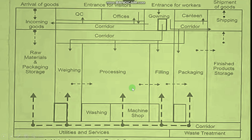There is a filling section where the processing unit will fill products. In a pharmaceutical house, a quality control laboratory is essential. There are also QC lab offices, gowning rooms — where workers change clothes — special rooms for worker entrance, canteen and corridors. Apart from this, there are different utilities and services, a waste management system, and proper areas for movement. Simply: arrival of goods is incoming, then processing, then post-processing.